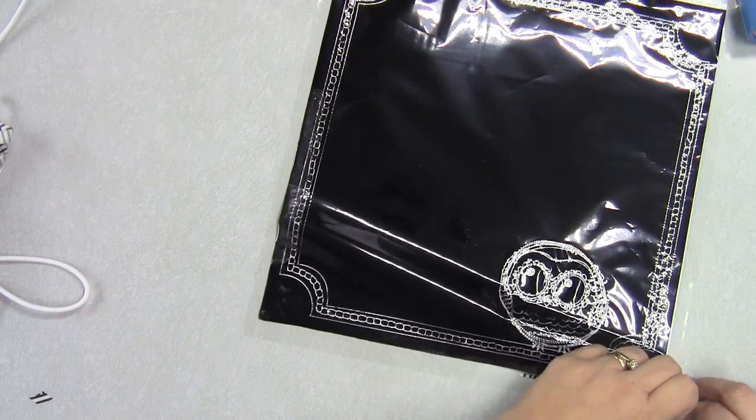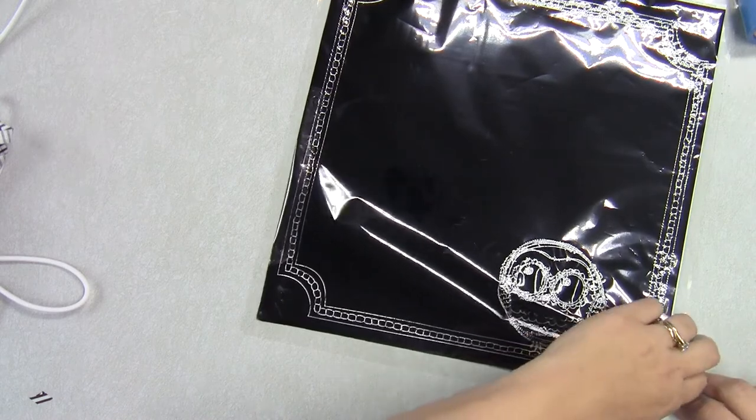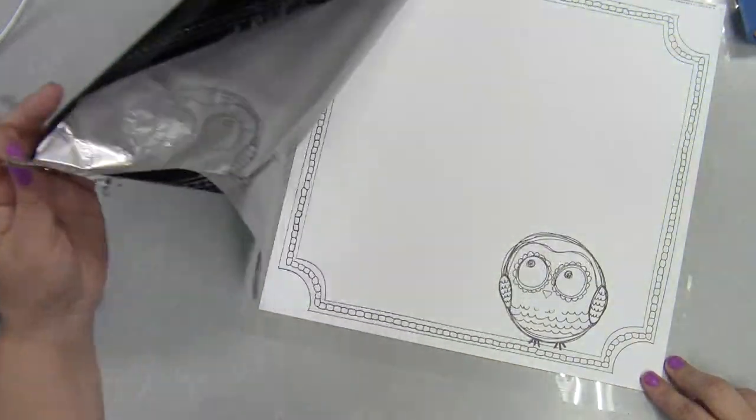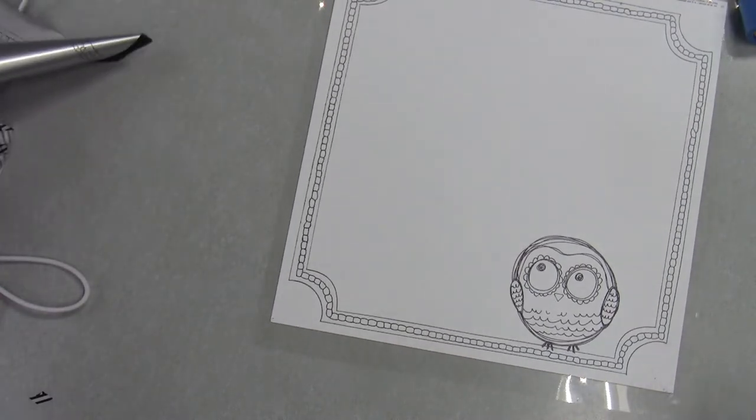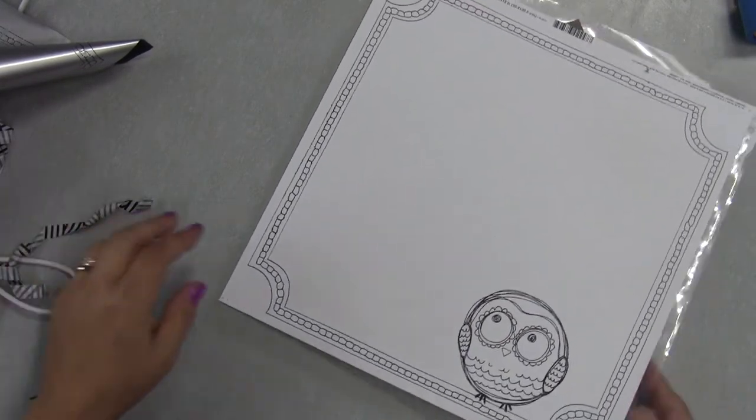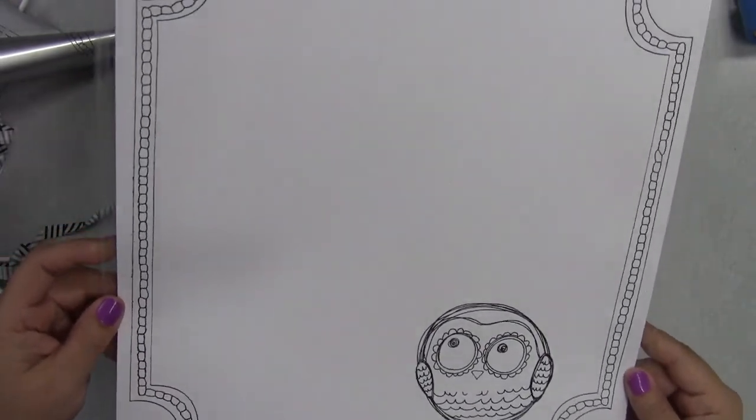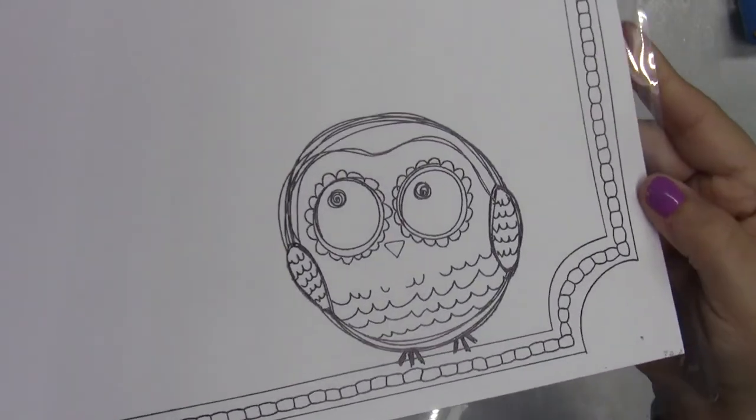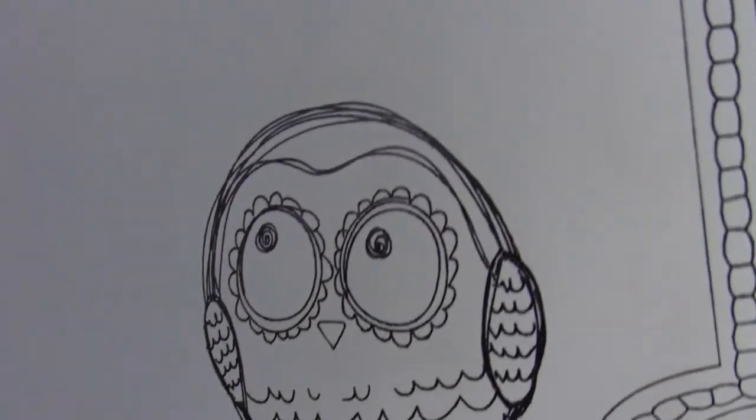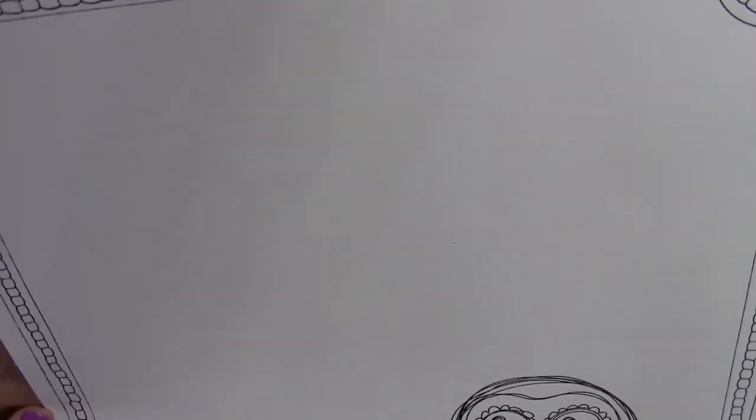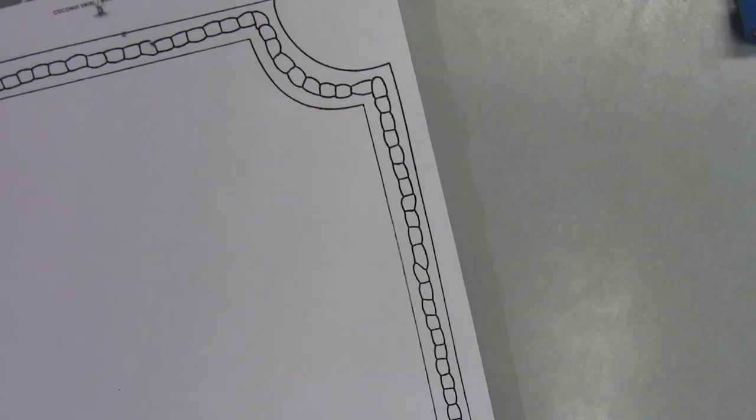So I really like the Foil Quill. I think it's a great little tool. There are other ways to get a foiled look. You could use a Minc machine and a laser printer, or you could just run this through the Cameo using the sketch function. Those are all great options. I really like the fact that you got some texture and some shine, and it just gives a little bit of a different look than you would get with the other two options available for foiling.